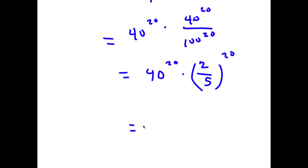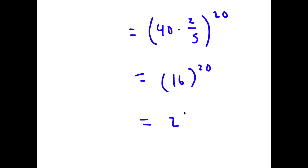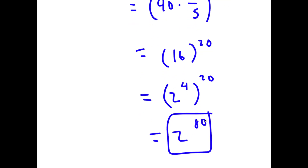This equals 40 times 2 over 5, to the power of 20. Now 40 times 2 is 80, and 80 divided by 5 is 16. So I have 16 to the power of 20, which equals 2 to the power of 4 to the power of 20, which equals 2 to the power of 80. That is my second method.